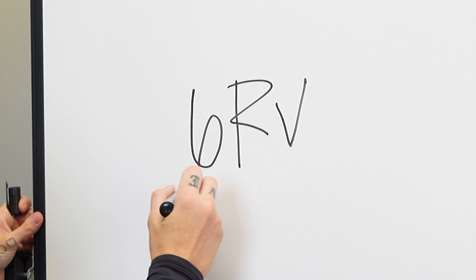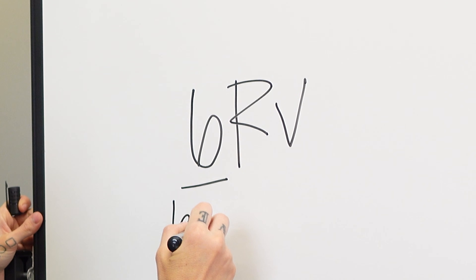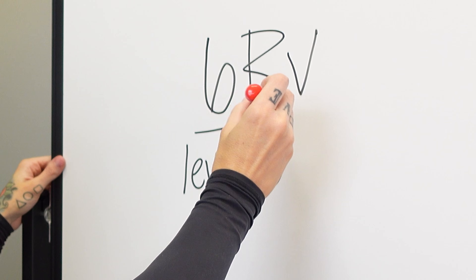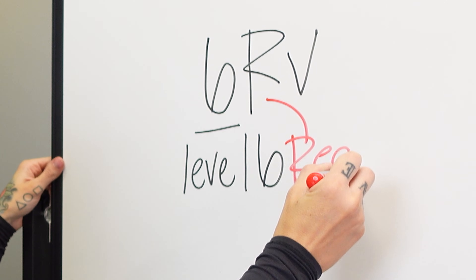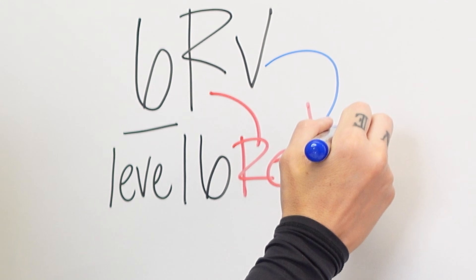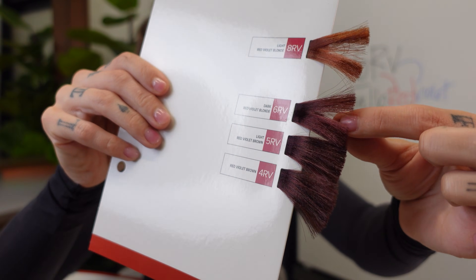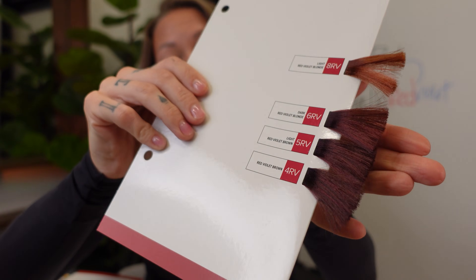So the number is the level — level six. The first letter represents the dominant tone. R stands for red, so it's a level six with a dominant tone of red. V is violet, and violet is the secondary tone. Red is listed first because it's dominant — it has more red than violet. When you look at the swatch, you can see it's more red than violet, but it has a cast of purple or violet.